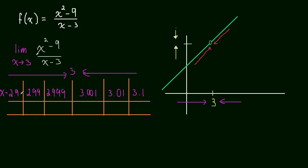But if we plug 2.9 in, what comes out is 5.9. So we just did 2.9 squared minus 9 divided by 2.9 minus 3. We got 5.9 down here. We're going to get 5.99. We'll get, and for this value, we'll get 5.999.